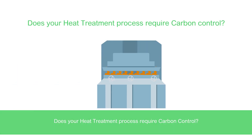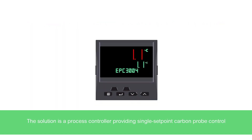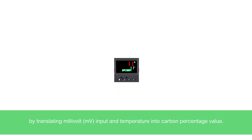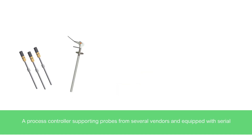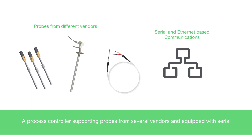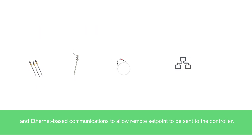Does your heat treatment process require carbon control? The solution is a process controller providing single set point carbon probe control by translating millivolt input and temperature into a carbon percentage value. The process controller supports probes from several vendors and is equipped with serial and Ethernet-based communications to allow remote set point to be sent to the controller.